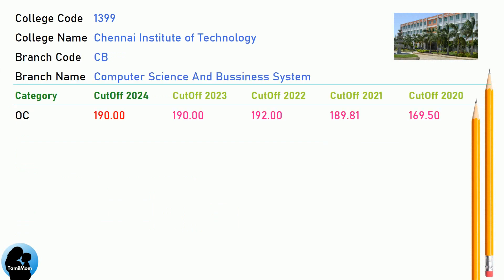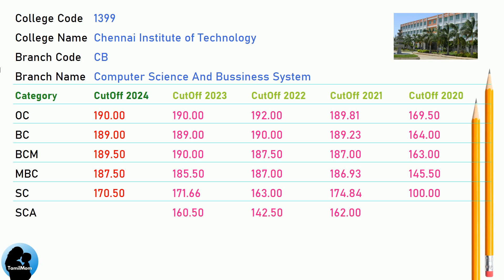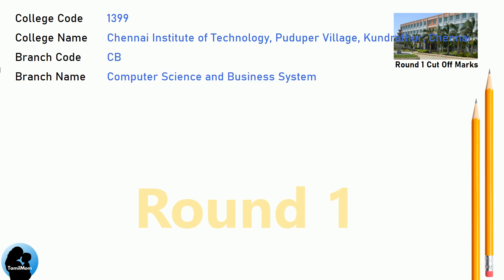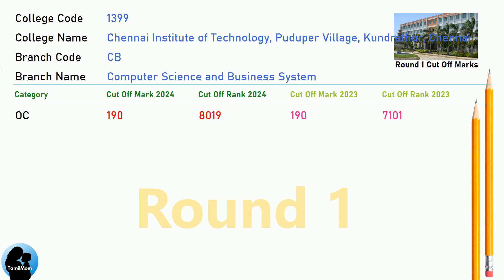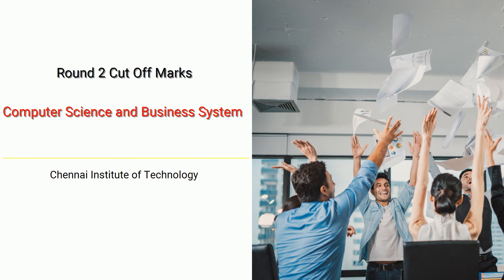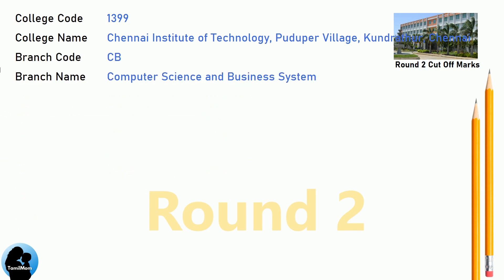DNA Cut-off for Chennai Institute of Technology in Computer Science and Biomedical Engineering, AI and Machine Learning. DNA Round Cut-off for Chennai Institute of Technology in Computer Science and Business System.